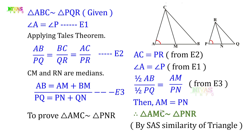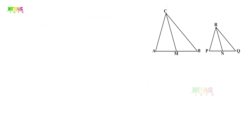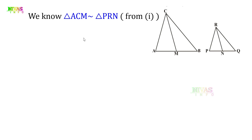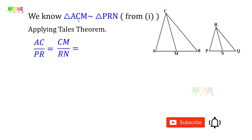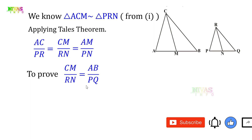Since triangle ACM is similar to triangle PRN, applying the proportionality theorem: AC/PR = CM/RN = AM/PN. Therefore CM/RN = AM/PN. This gives us the first result. Since AB is the complete base and PQ is also the complete base, we have two ratios: CM/RN = AM/PN.